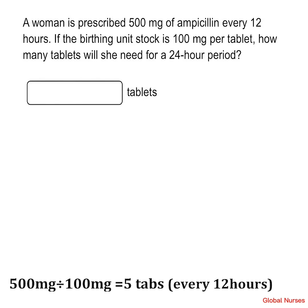You divide the prescribed dose by the available dose — 500 divided by 100 — which gives five tablets. That means every 12 hours you give five tablets. For a 24-hour period, multiply five by two, giving 10 tablets. You can also divide 24 by 12 to get two, then multiply by five. The answer is 10 tablets.